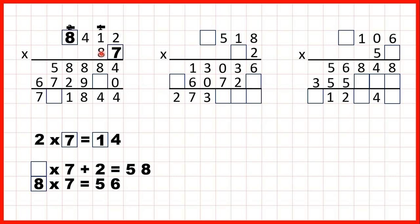Now, 2 times 8 is 16, so that's 1, 6. 1 times 8 is 8, plus 1 is 9. 4 times 8 is 32, so that's 3, 2. 8 times 8 is 64, plus 3 is 67. So now, 4 plus 0 is 4. 8 plus 6 is 14, so 1, 4. 1 plus 8 plus 9 is 18, so 1, 8. 1 plus 8 plus 2 is 11, so 1, 1. 1 plus 5 plus 7 is 13, 1 plus 6 is 7.